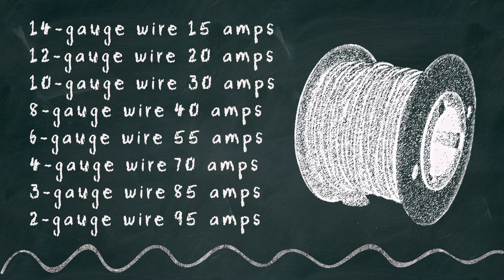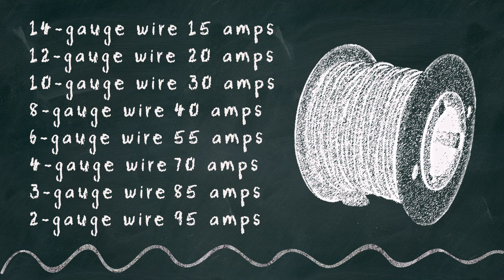The wire thickness or gauge has maximum current ratings for each gauge. Though lower gauge wires can carry more current, they are also more expensive. 4 gauge wire costs about $1 per foot, while 16 gauge wire costs $0.25 per foot.